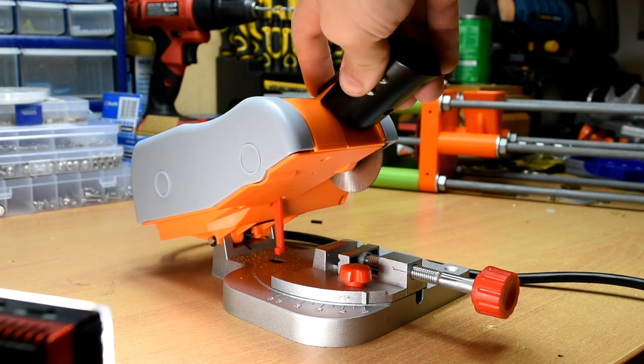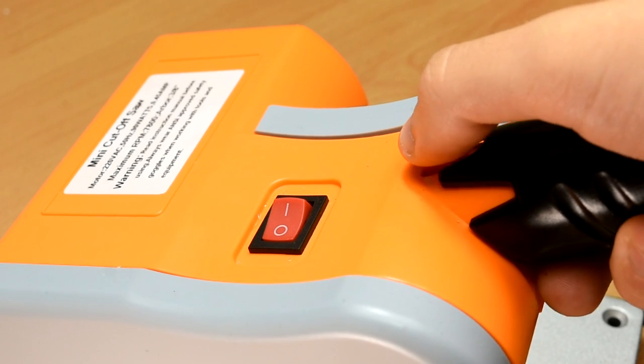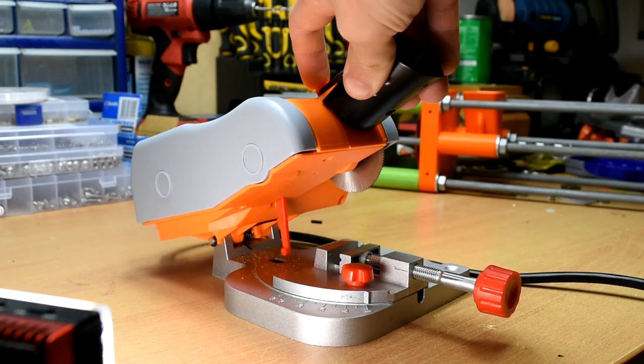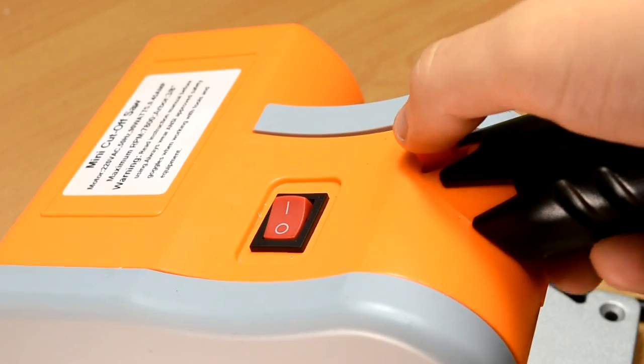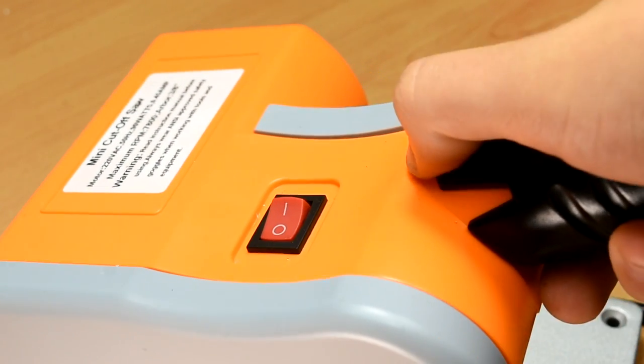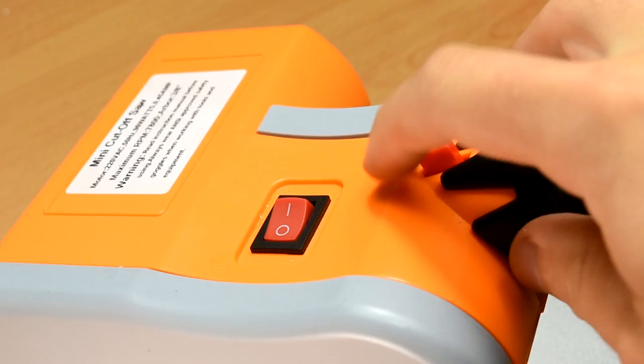The saw has a safety to keep you from pushing it down and cutting by accident. When you depress this button, this arm moves and allows the saw to drop. I really don't like this system. I would like for the button to also turn the motor on, since the on and off switch isn't particularly easy to find in an emergency. I may mod mine in the future to work like this.